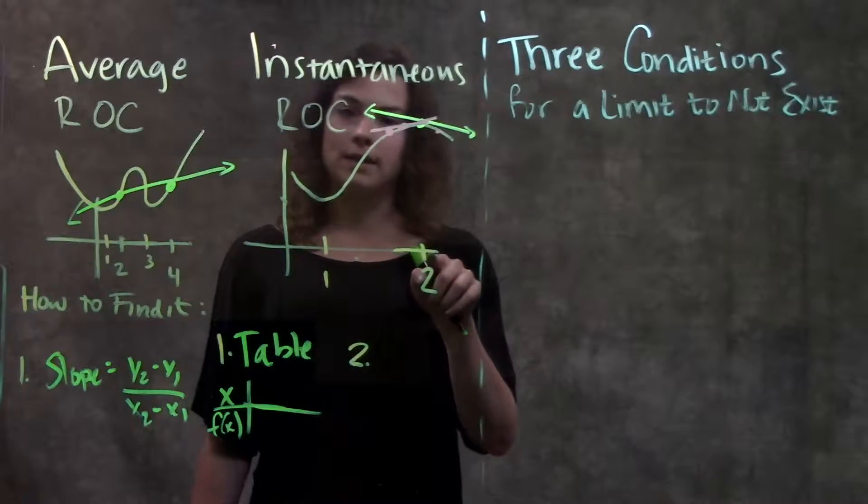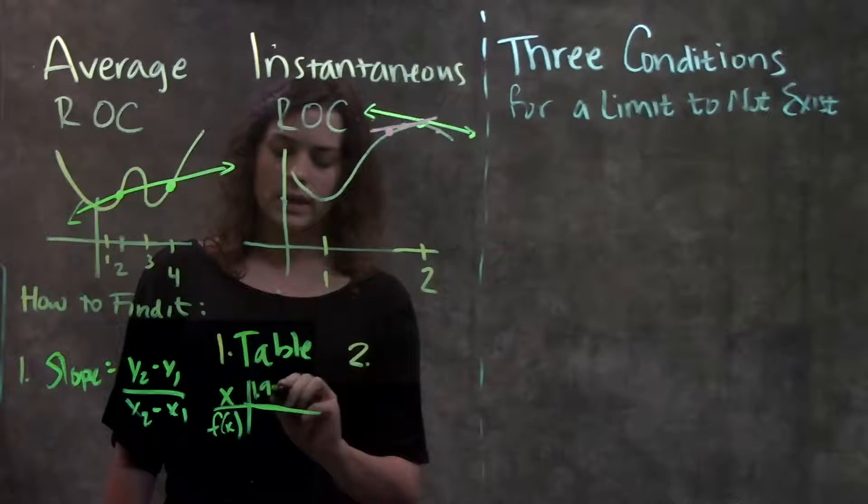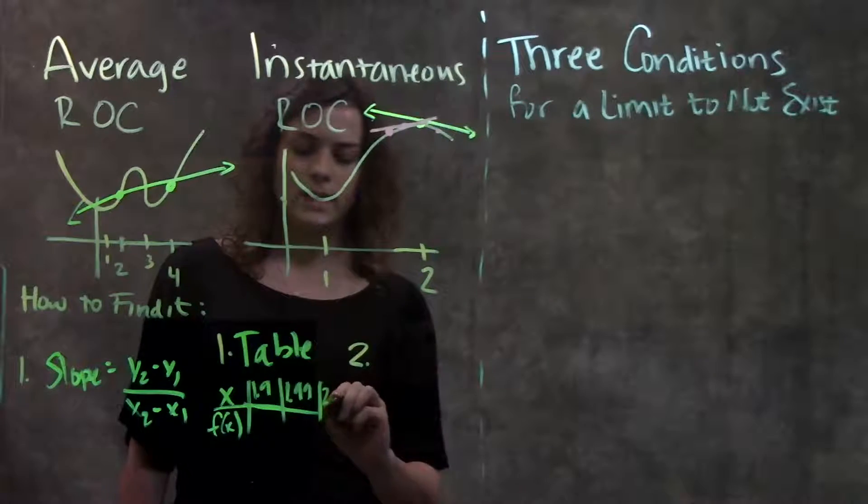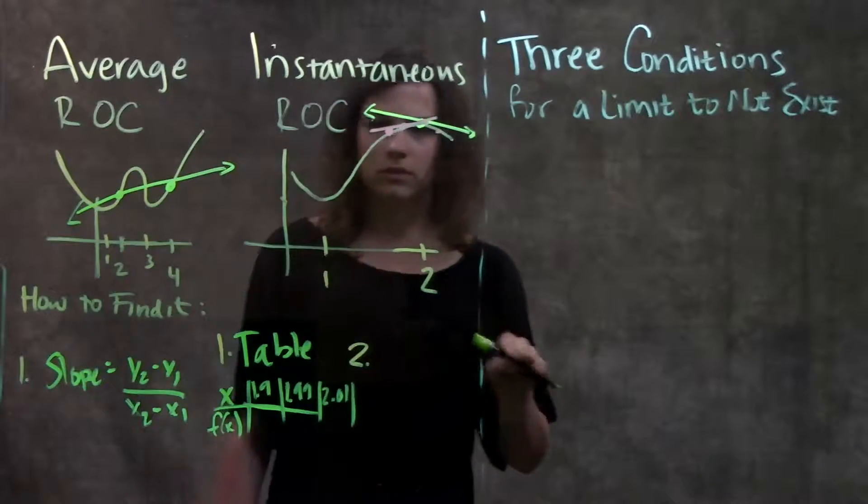If I'm interested in the slope at x equals 2, I might plug in 1.9, 1.99, and then going from the other side, 2.01, 2.001, etc.